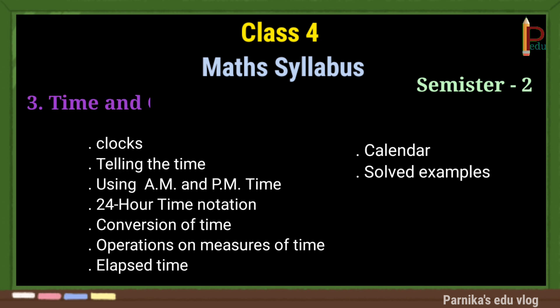The third chapter is Time and Calendar. Up to third class, we learned how to read and write time, but here we additionally learn how to use AM and PM, how to use 24-hour time notation, and conversion of time. So it is a very interesting chapter.